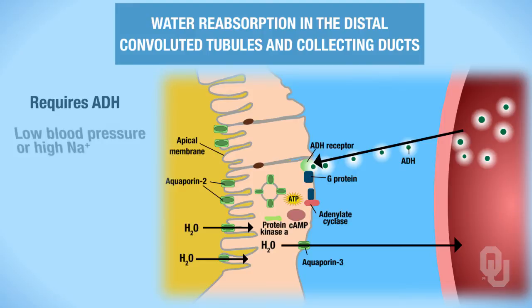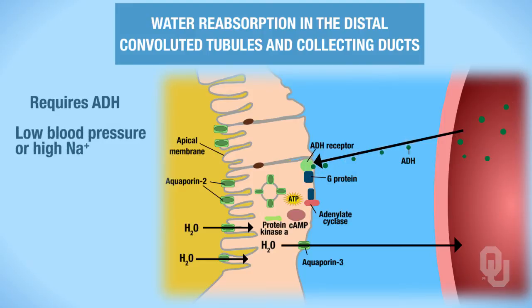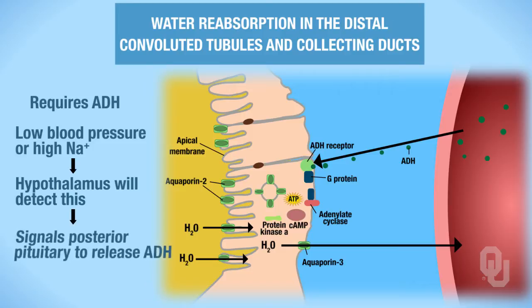If you have low blood pressure or a high sodium level in the plasma, the hypothalamus will detect this and signal the posterior pituitary to release ADH out into the plasma.